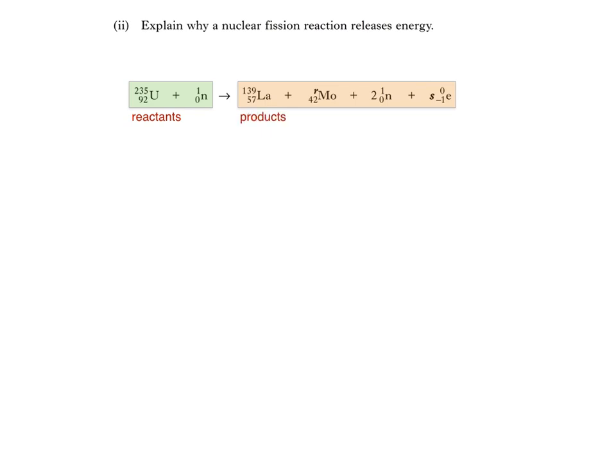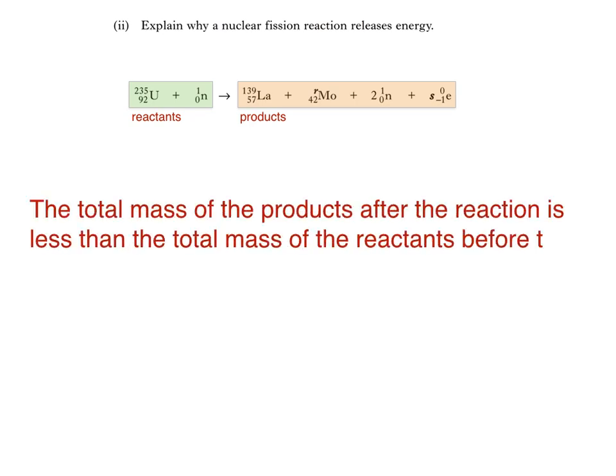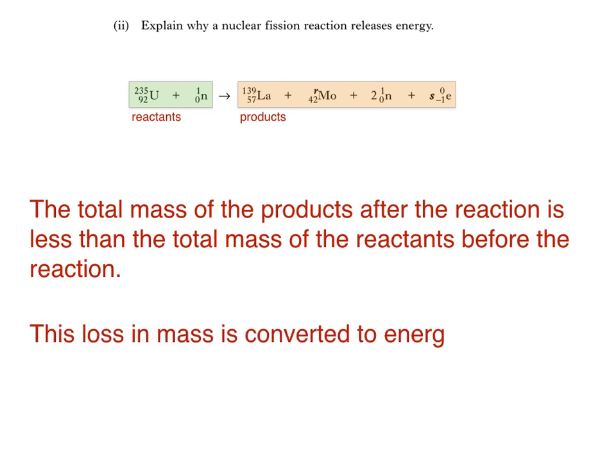We would give an identical answer if we were asked why a nuclear fusion reaction releases energy. The reason is that the total mass of the product after the reaction is less than the total mass of the reactants before the reaction. It was Einstein who proposed that mass and energy are equivalent, and that this loss in mass is converted to energy according to the equation E equals mc squared. We'll be using this equation in the next part of the question.